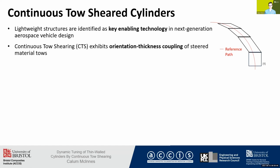The CTS process steers material tools along a curved linear reference path by shearing the material in-plane. As you shear material in-plane, you get an out-of-plane thickness increase, which can be exploited in a design setting. When designing a cylinder, we have two intuitive steering directions: we can steer the tools axially along the cylinder axis, or steer circumferentially around the circumference.